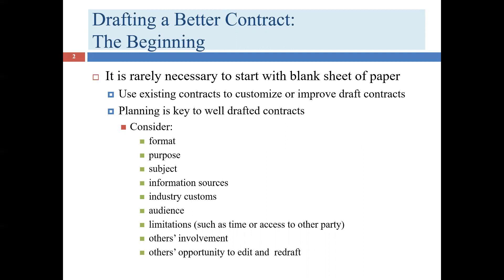Factors that influence format include the length of the document, industry customs, the preference of your attorney, the preference of the client, and the preference of opposing counsel. All are legitimate factors. You probably already have at least one model, and it makes sense to use that as a starting point — but you'll definitely want to think through the format. Another issue is the purpose: why are you creating this document, and what is the reason for the contract?